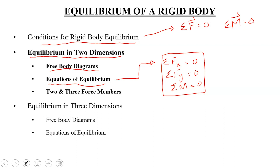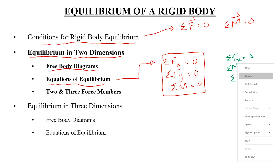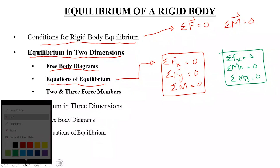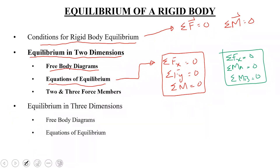There are two alternate sets of equations as well. The second set uses summation Fx equal to 0, summation Ma equal to 0, and summation Mb equal to 0. If you understand better by summing moments about certain points with unknown reaction forces, then you can apply this set. In the first set you have two force equations and one moment equation; in the second set you use one force equation and two moment equations to find the support reactions.